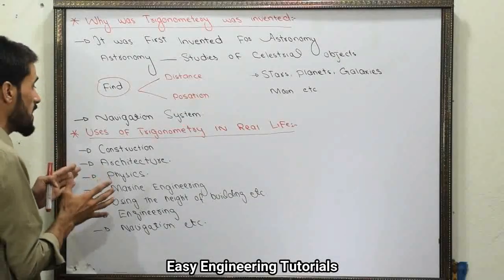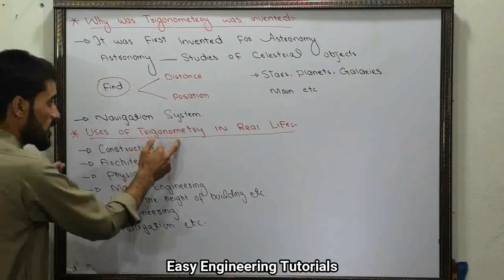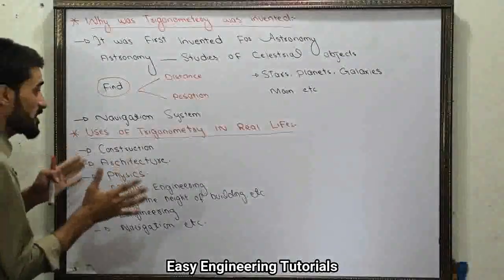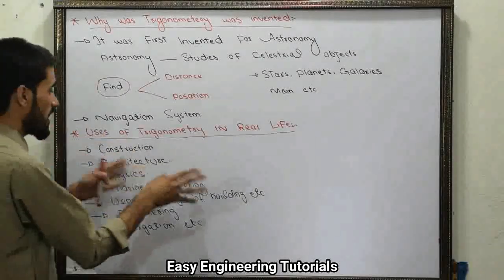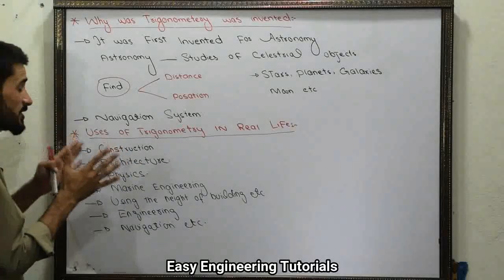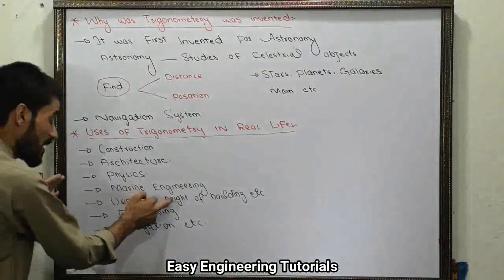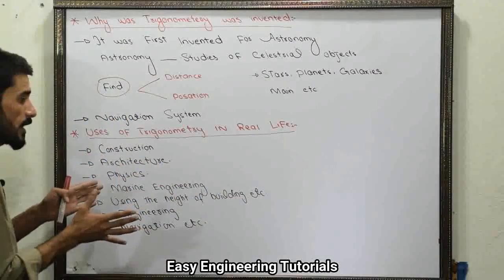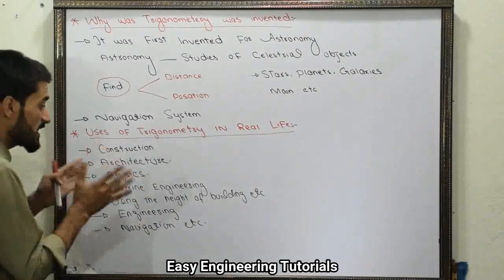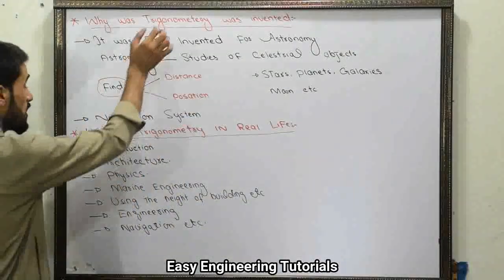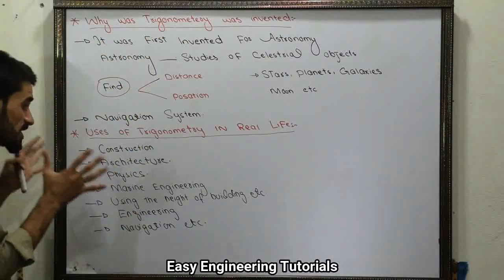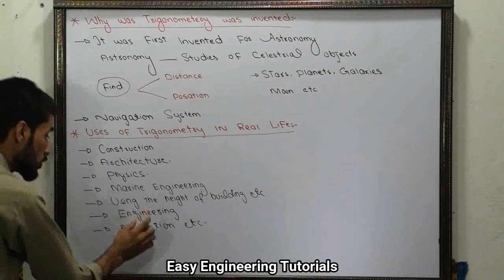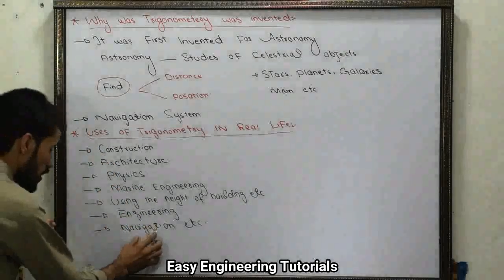Abhi real life mein trigonometry ki kya uses hain? Trigonometry is used for construction purposes, architecture, and most extensively in physics. Is ke alawa marine engineering mein bhi iska bohat zyada use hai. Using trigonometry we can find the height of a building, a mountain, or a tree — kisi bhi cheez ka height find karna ho. Is ke alawa engineering ke kamon mein aur navigation system ke liye bhi trigonometry use hoti hai.